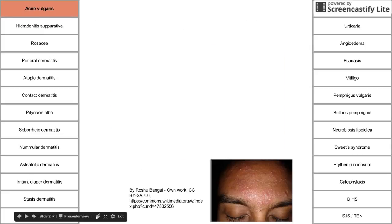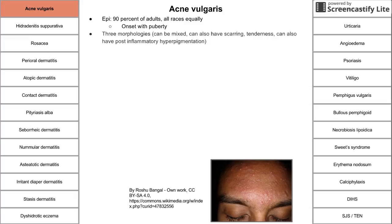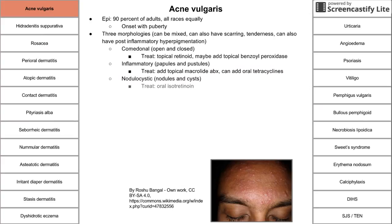We're going to start with acne vulgaris. Acne vulgaris has happened in 90% of adults and it affects all races equally. It usually starts around puberty with an increase in hormones. There are three morphologies of acne vulgaris. The first morphology is comedonal acne vulgaris, which can include open and closed comedones.